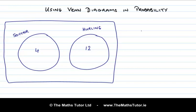Based on this diagram, we can work out some probabilities. If I pick a person at random from this group, what is the probability that I pick a soccer player? The probability of a soccer player is the total number of soccer players, 4, divided by the total number of people in the group, which is 16. That can be simplified to a quarter.